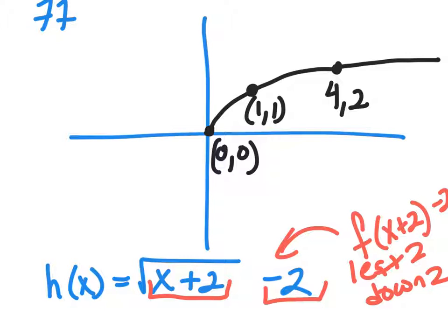0, 0. Left 2, down 2 would become negative 2, negative 2. 1, 1. Left 2, down 2 would become negative 1, negative 1. 4, 2. Left 2, down 2 would become 2, 0.